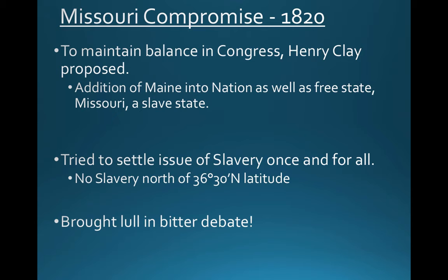They also decided to try to settle this once and for all by creating a line at 36 degrees and 30 minutes north latitude. Any states coming into the Union above this line would be free states, and any states coming in below this line would be slave states. This actually worked for a bit — it brought a lull to the bitter debate — but it would only last so long, as this debate would really ramp up more as we get closer to the Civil War.